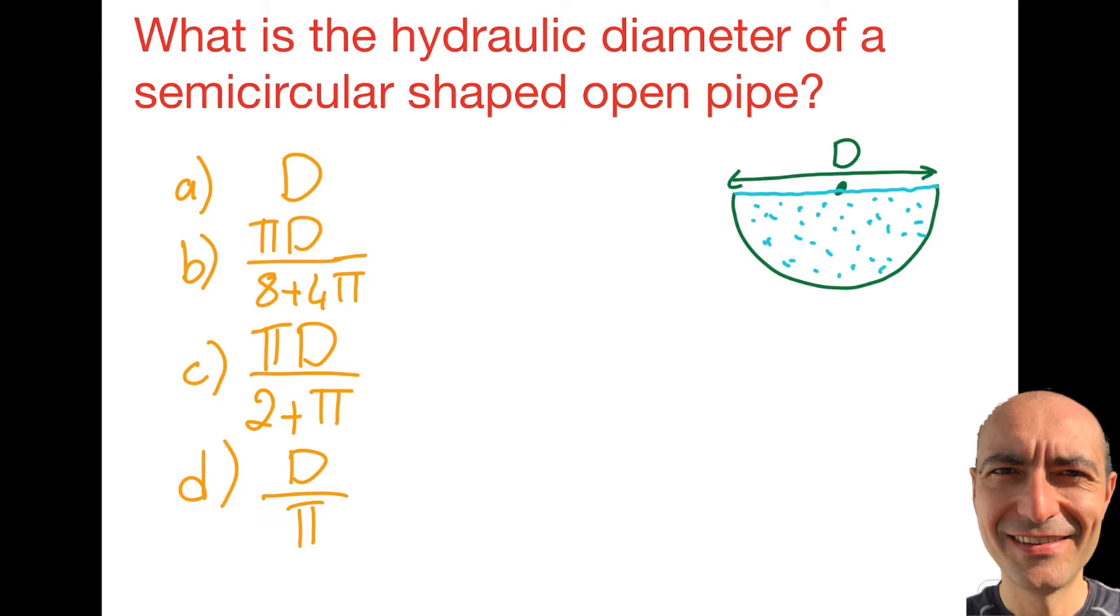Let's go ahead and solve this question. First thing is, look at the choices—some of them are fairly involved. Let's see whether we need them. So what I do is I find DH will be 4 times the cross-sectional area.